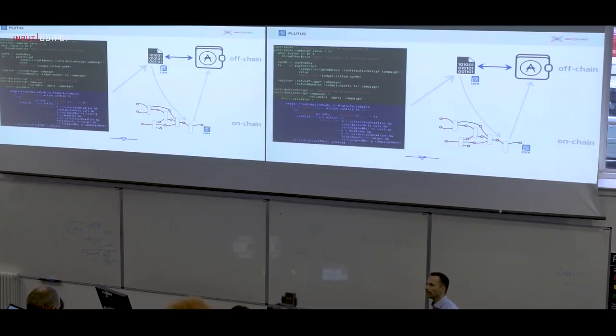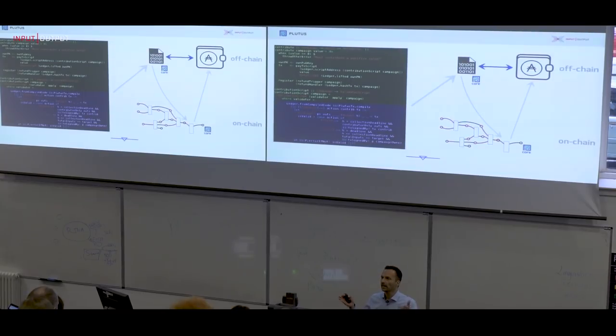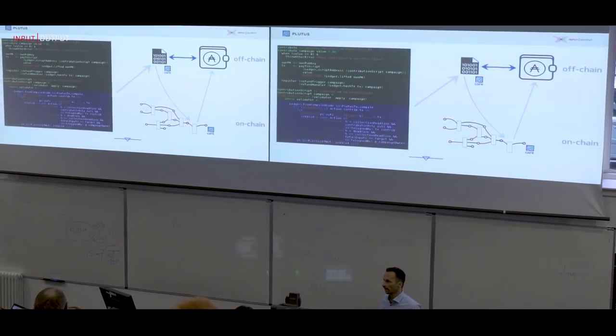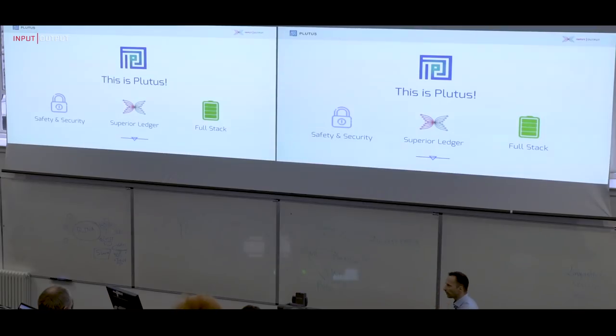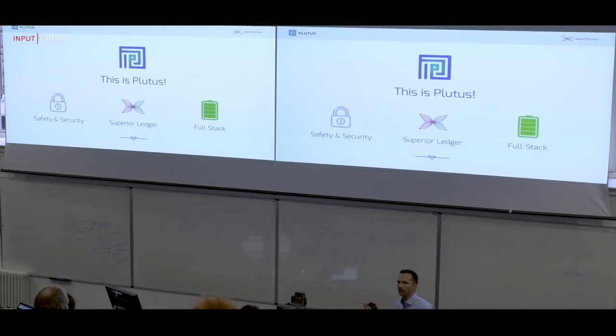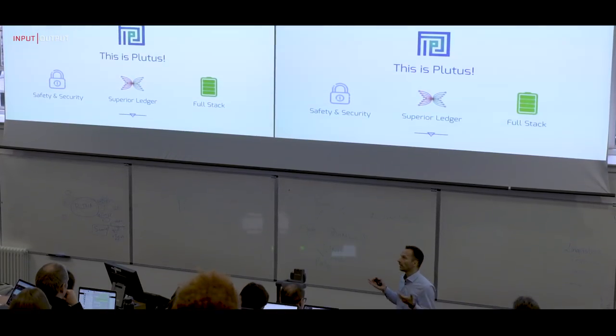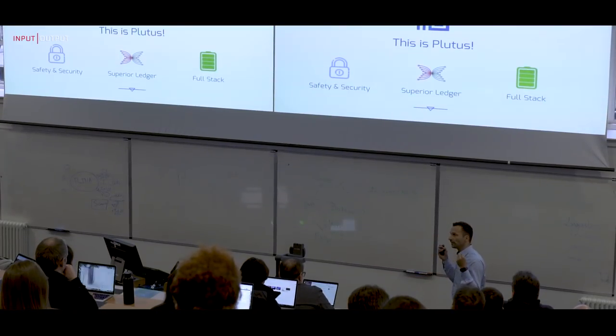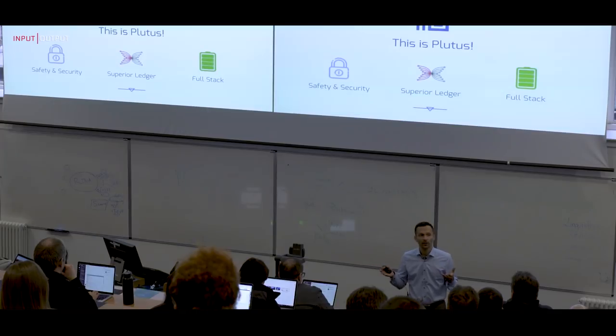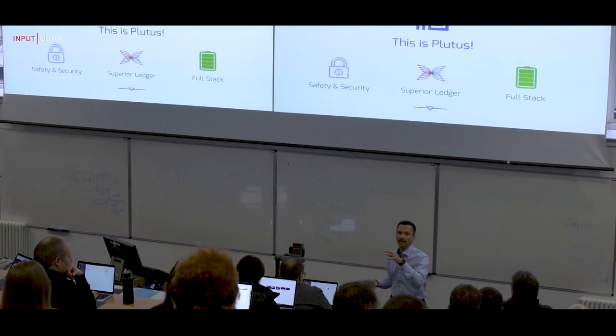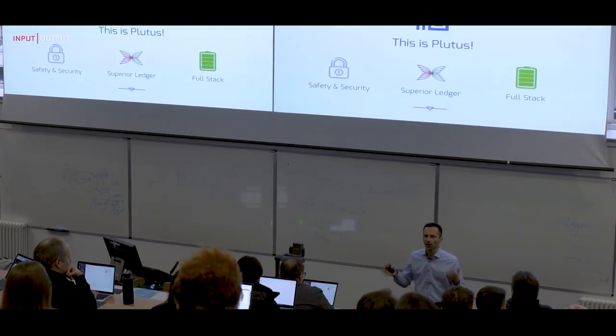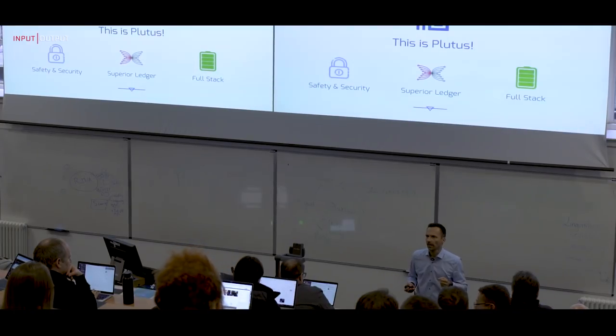It's also quite simple. But simple is good. Because for simple architectures, we can check that they actually always do the right thing. So overall, that's Plutus. It's built from the ground up with a focus on safety and security using the methods of functional programming and type systems. It uses the superior ledger structure provided by UTXO ledgers, in this case extended with the extended UTXO model. And it provides a full-stack environment where you can do on- and off-chain code at the same time in an integrated manner. Thank you very much.